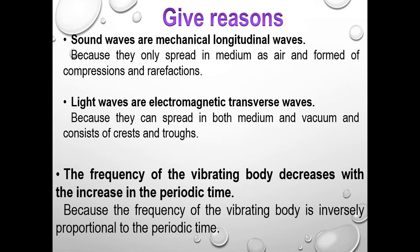Important exam questions: Sound waves are mechanical and longitudinal — mechanical because they only spread through a medium such as air; longitudinal because they are formed by compressions and rarefactions, meaning the direction of particle vibration is along the direction of wave propagation. Light waves are electromagnetic and transverse — electromagnetic because they can spread through both medium and vacuum; transverse because they consist of crests and troughs, and the vibration is perpendicular to the direction of propagation. The frequency of a vibrating body decreases with an increase in periodic time because frequency is inversely proportional to periodic time.